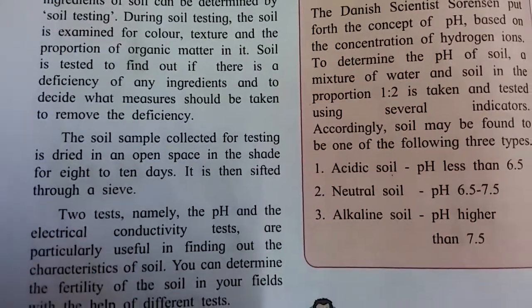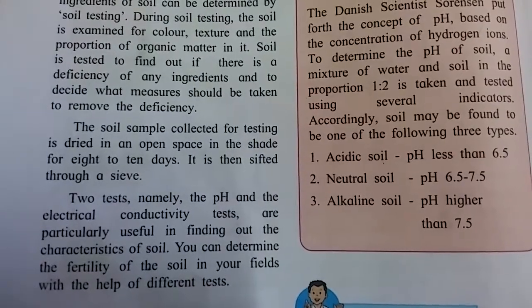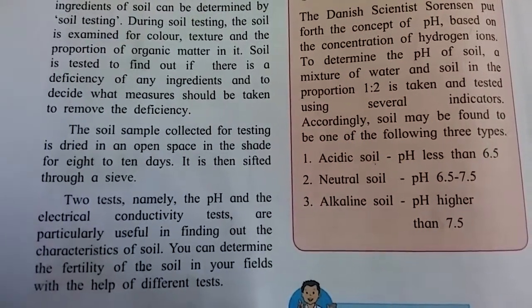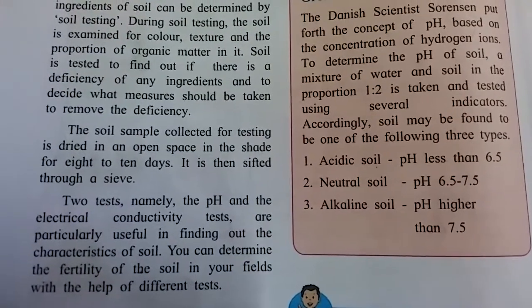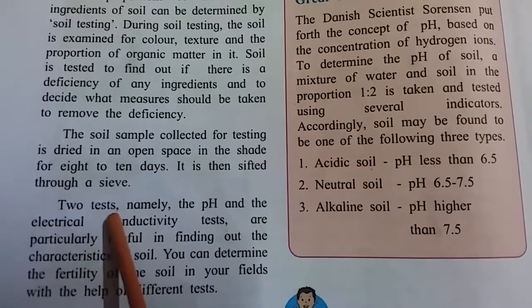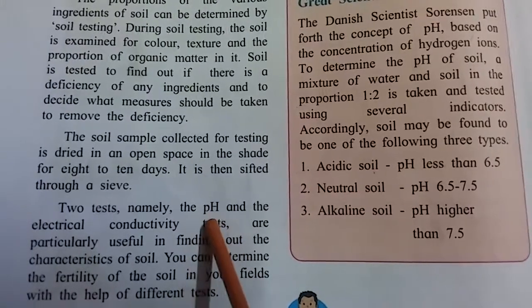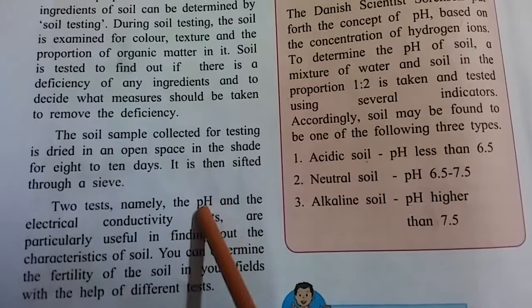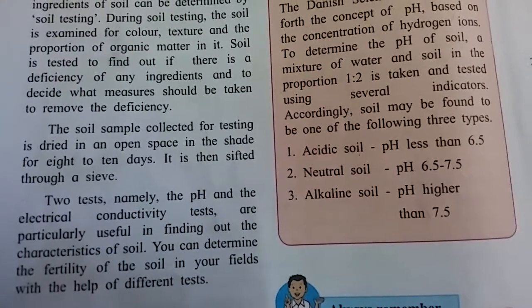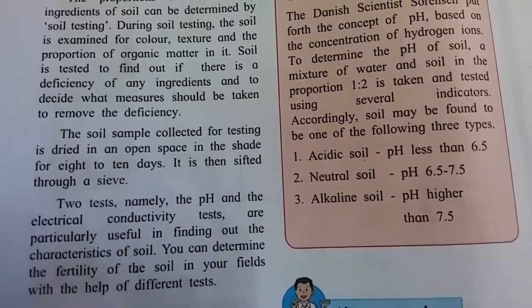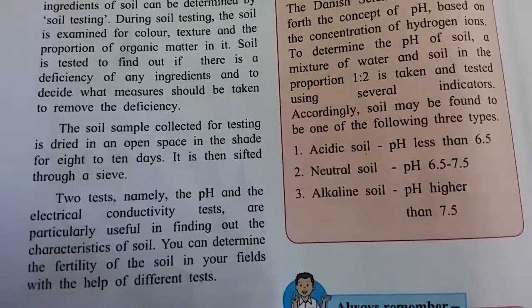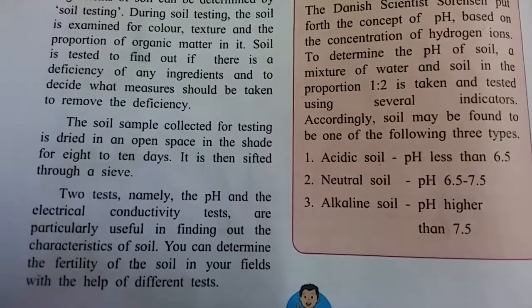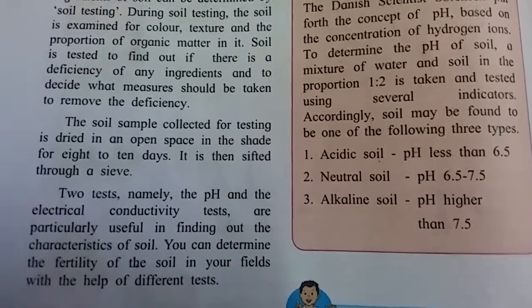Two tests — namely the pH test and the electrical conductivity test — are particularly useful in finding out the characteristics of soil. You can determine the fertility of the soil in your field with the help of these tests. Soil testing is done to identify whether the soil's fertility is good for crops.